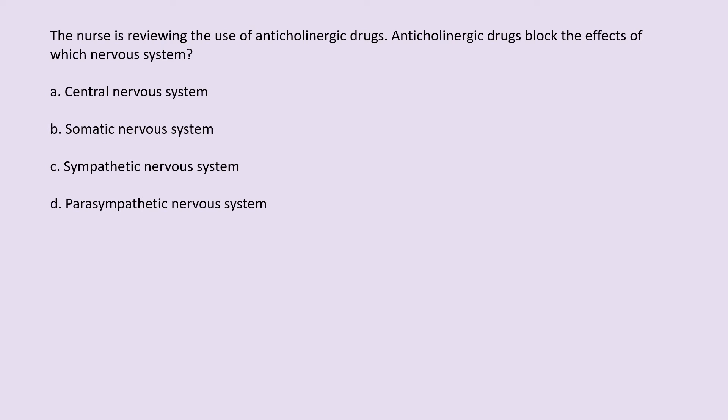The nurse is reviewing the use of anticholinergic drugs. Anticholinergic drugs block the effects of which nervous system? A. Central nervous system. B. Somatic nervous system. C. Sympathetic nervous system. D. Parasympathetic nervous system.